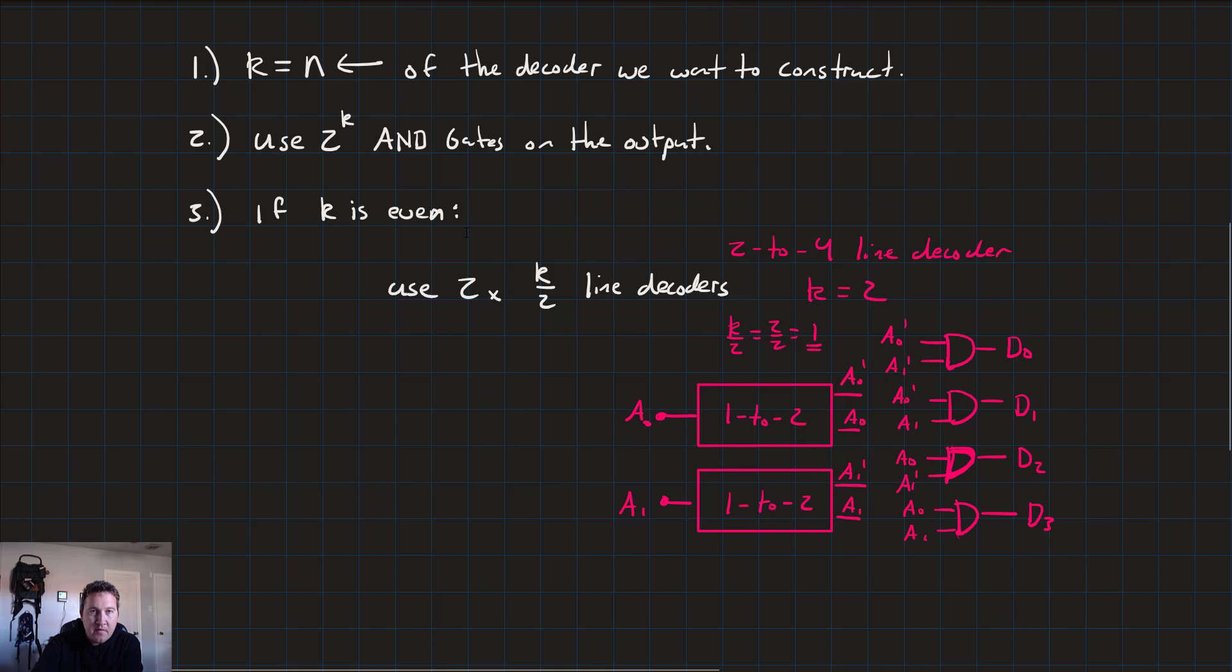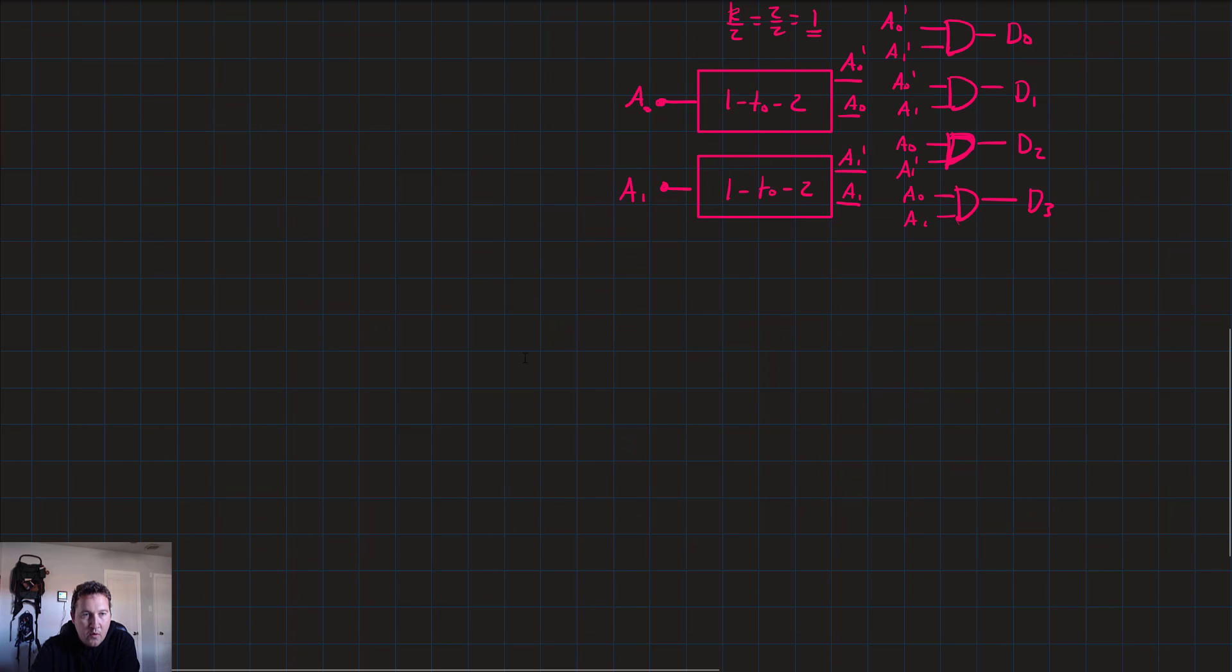Now that was step three, if k is even, but what about if k is odd? We'll call that step four. If k is odd, then we use a k plus 1 over 2 decoder and a k minus 1 over 2 decoder.